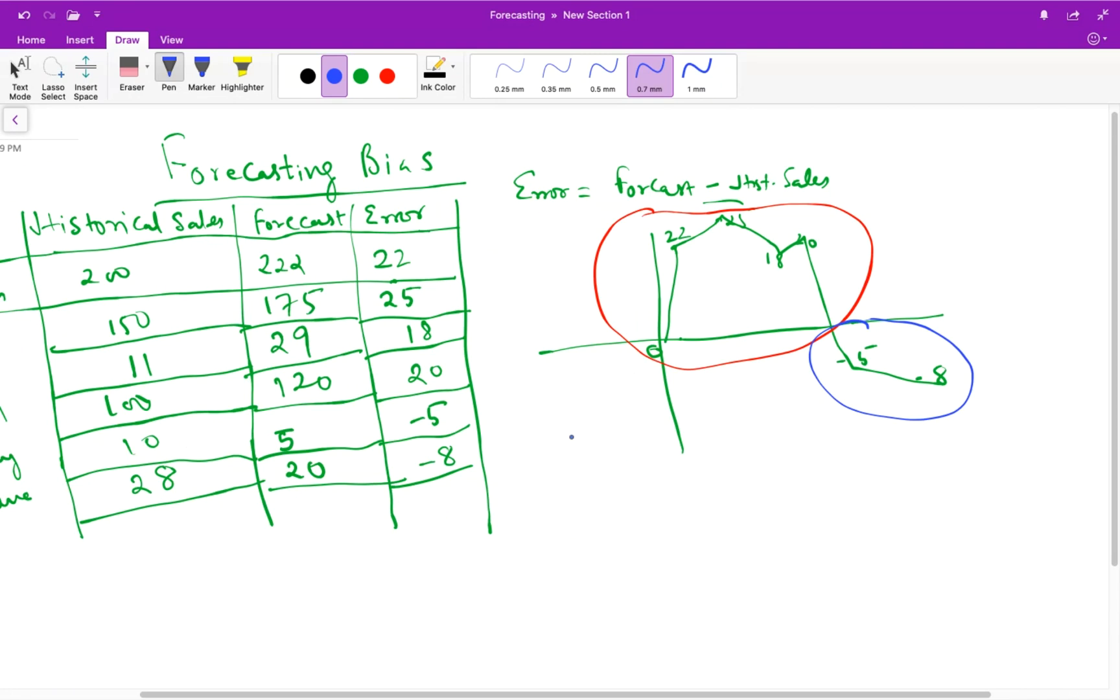So what we see here from the graph is, we are forecasting in most of the scenarios higher than the historical sales. So this scenario is called positive bias. The forecast is on the higher side.